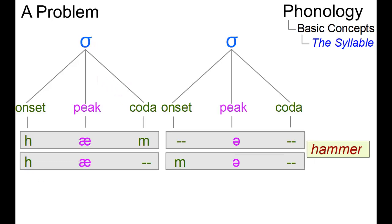When words consist of more than one syllable we may be confronted with a problem. In hammer it is not clear whether the M is the coda of the first syllable, the onset of the second syllable or both. This phenomenon is referred to as ambisyllabicity.